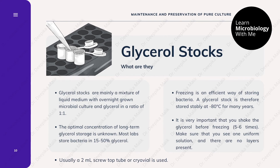Glycerol stocks are mainly a mixture of liquid medium with overnight grown microbial culture and glycerol in a ratio of 1:1. The optimal concentration for long-term glycerol storage is unknown, but most labs store bacteria in 15 to 50 percent glycerol. Usually a 2 ml screw cap tube or cryovial is used. A glycerol stock is stored stably at minus 80 degrees Celsius for many years. It is important to shake the glycerol before freezing five to six times to ensure one uniform solution with no layers.